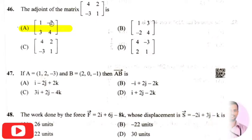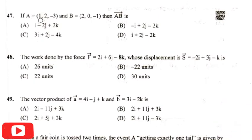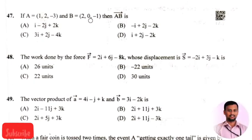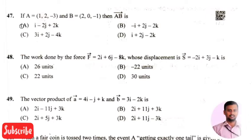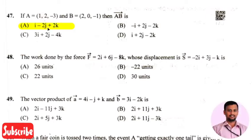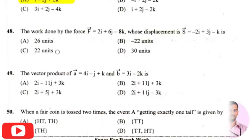The next question is: if a equals (one, two, two, minus three) and b equals (two, zero, minus one), then the product of vector a cross b is — the right answer is option one, that is i minus two j plus two k.